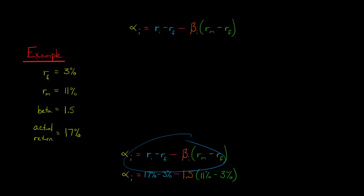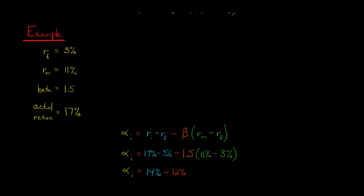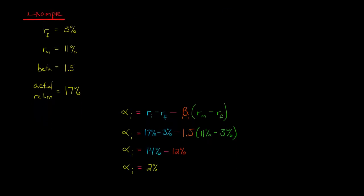We just take our formula from above and we're going to plug in numbers. We've got an actual return of 17% minus the risk-free rate, and then we're going to subtract this whole thing right here: the beta times the market risk premium, which is 8%. Doing a little math, we see that the alpha is 2%.